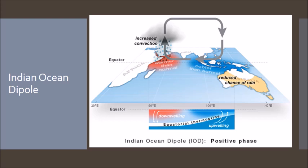The weather in Australia moves from the west to the east — from Western Australia over towards us — so things that occur in that general area have a huge impact on whether we have rain. This is the positive phase. A positive phase means there's a reduced chance of rain in Australia and more chance of rain over in Africa and maybe into the Middle East.